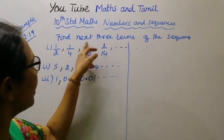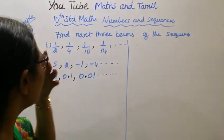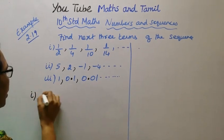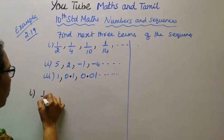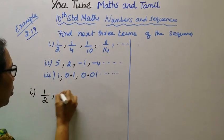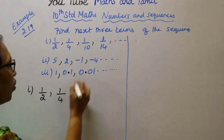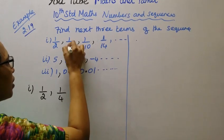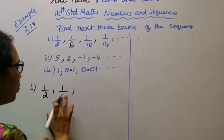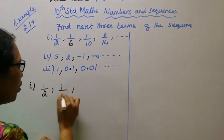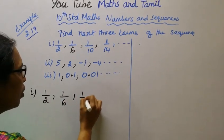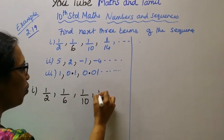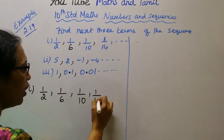Find the next 3 terms of the sequence. First subdivision: 1/2, 1/4, 1/6, 1/10, 1/14.